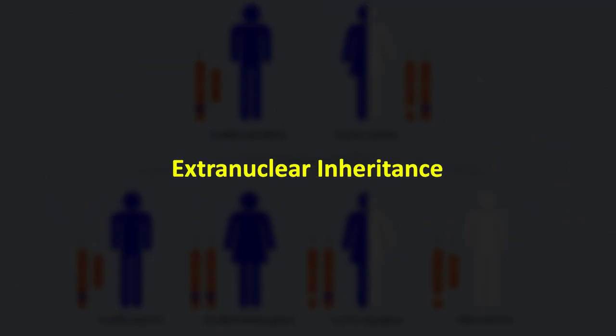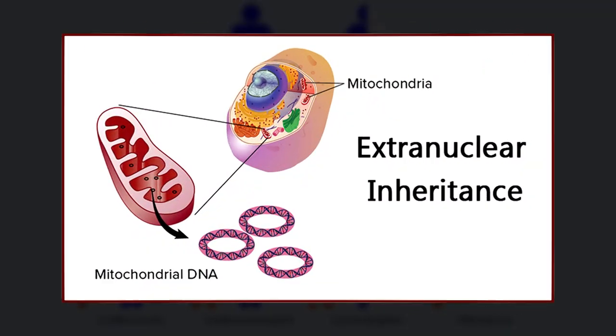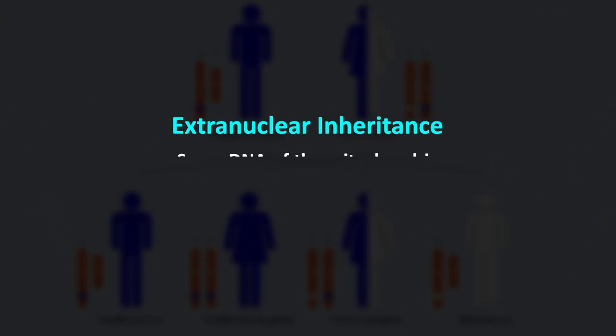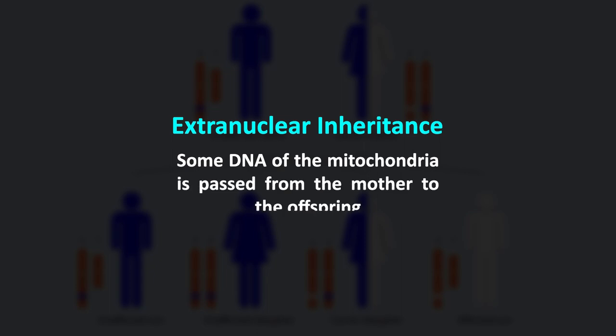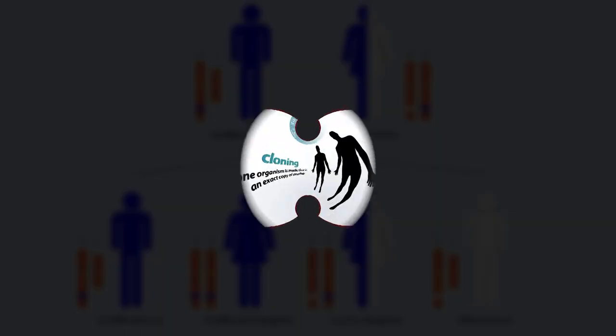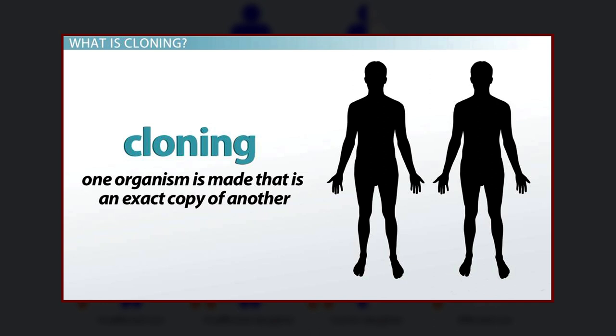Let's now discuss extra-nuclear inheritance, also known as cytoplasmic inheritance or sometimes mitochondrial inheritance. In this type, some DNA of the mitochondria is passed from a mother to the offspring. Although mostly extra-nuclear inheritance comes from the mitochondria, it may also occur from the chloroplast. In cloning, for example, there is a risk of transfer of genes from the mitochondria of the donor cell. There are even genetic disorders that pass from the mother to offspring that have their origin in mitochondrial DNA.